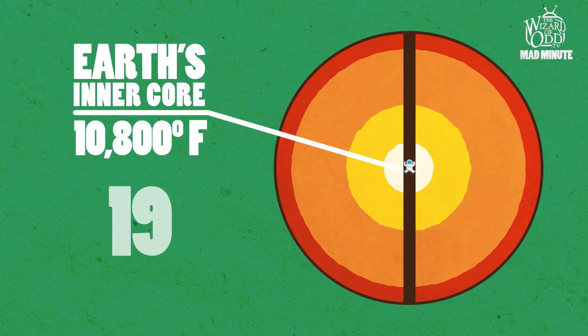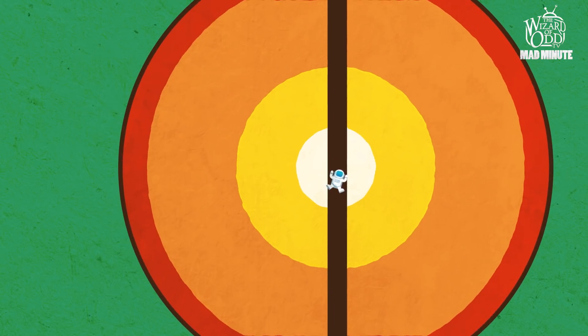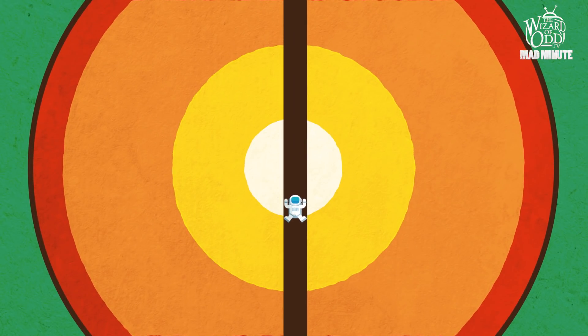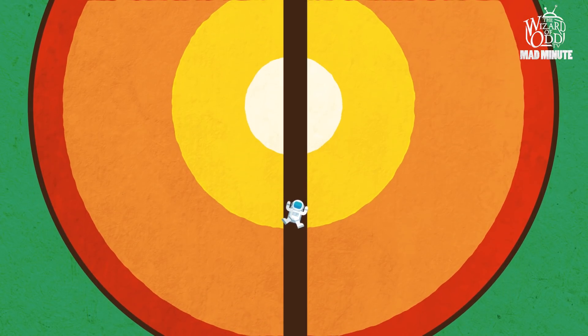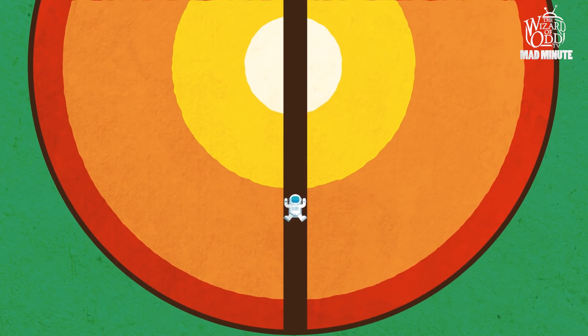It would take about 19 minutes for you to reach Earth's center, but as you get closer to the center, your downward acceleration decreases. You would feel completely weightless, just like an astronaut in space.